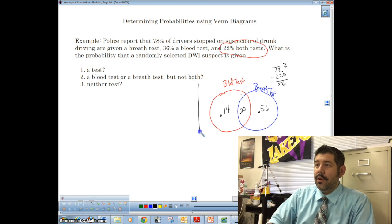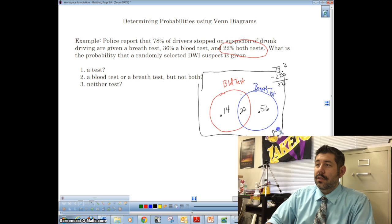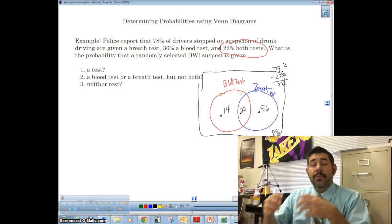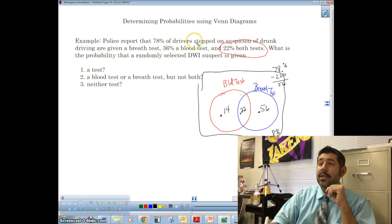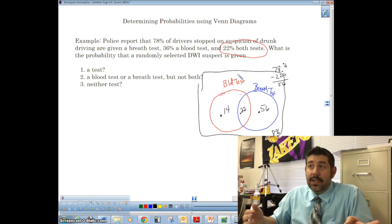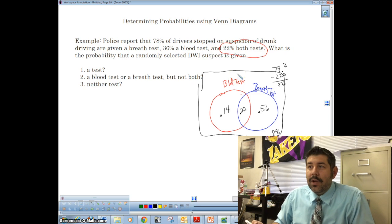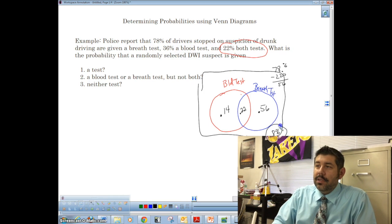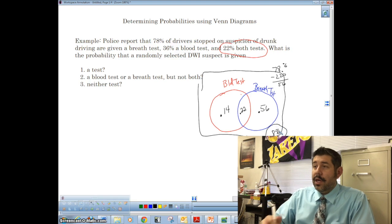So there's 8% that's left over. And that 8%, I should have drawn my little box here. That 8% is the group of people that don't get either test, right? Because police report that 78% of drivers stopped on suspicion of drunk driving are given breath test, blood test, and both tests. And there's probably some people that don't get either of those tests, right? And that's the outside part. These are the people that don't get any of those tests.